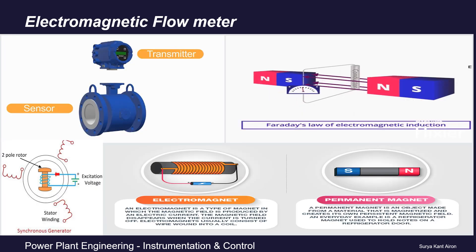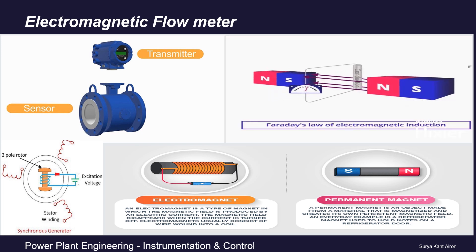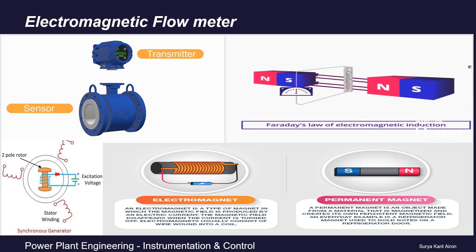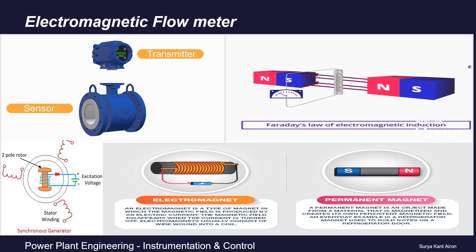Let's discuss in detail how an electromagnetic flow meter measures fluid flow rate. From outside, it looks like this — the blue one. On both sides we have flanges; these flanged connections are for upstream and downstream pipeline connection. As the name itself indicates, it is a device measuring flow and is based on electromagnets.